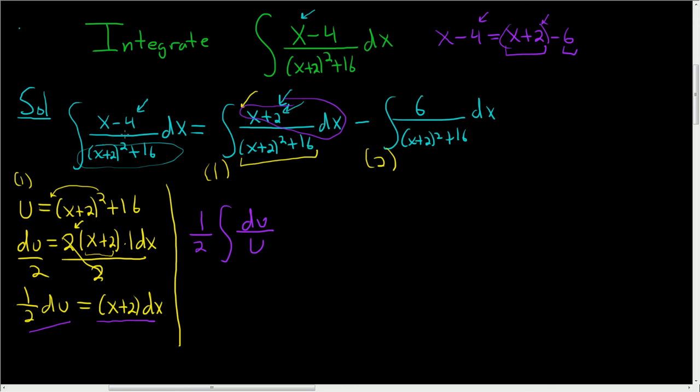For the second integral, we can make a substitution. We can let w equal x+2, so that dw is equal to dx. And this is going to give rise to an arctan.